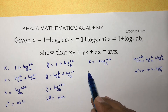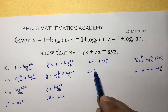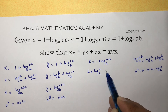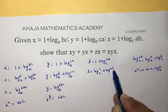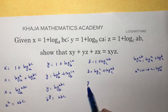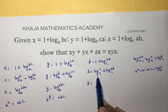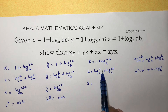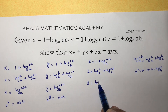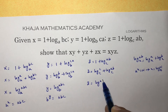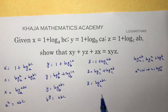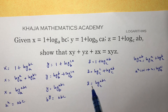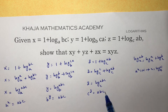For z equals 1 plus log AB to the base C, write 1 as log C to the base C, plus log AB to the base C. Applying the logarithm of a product gives log CAB, which is log ABC to the base C. In exponential form: C^z equals ABC.